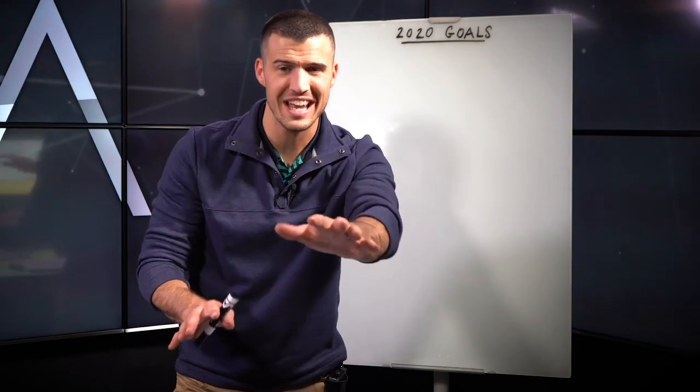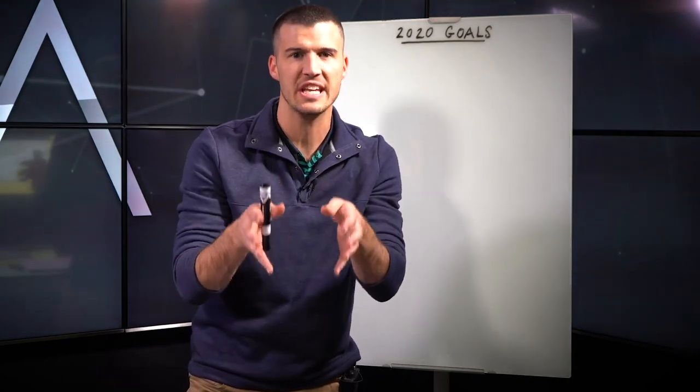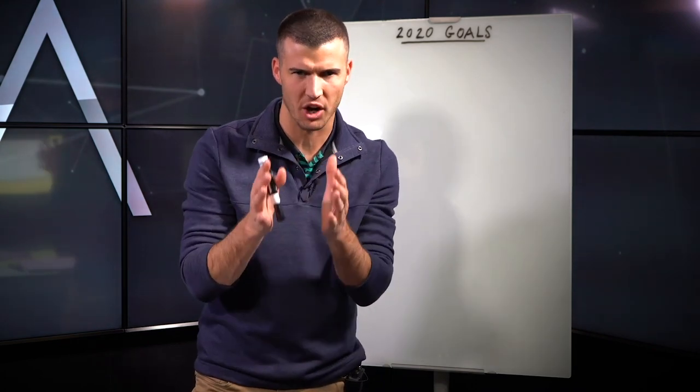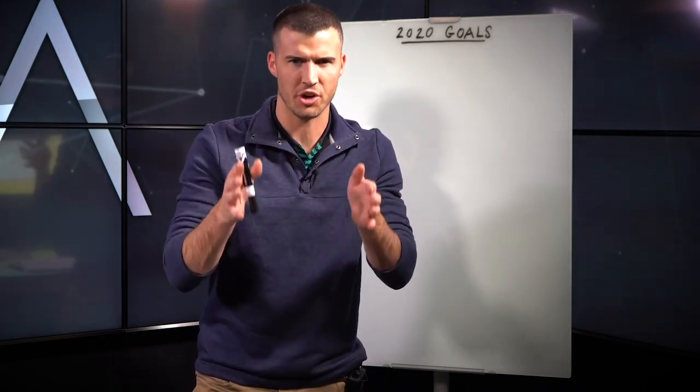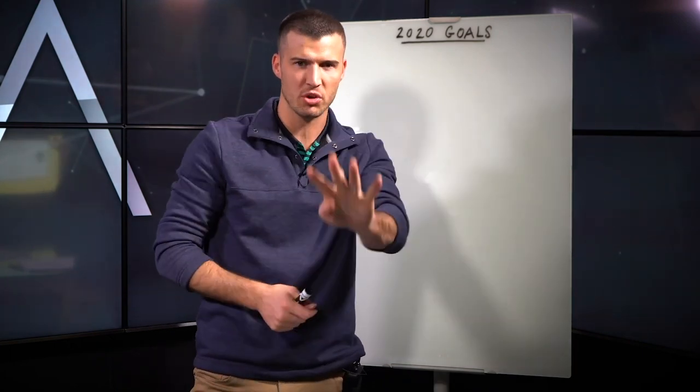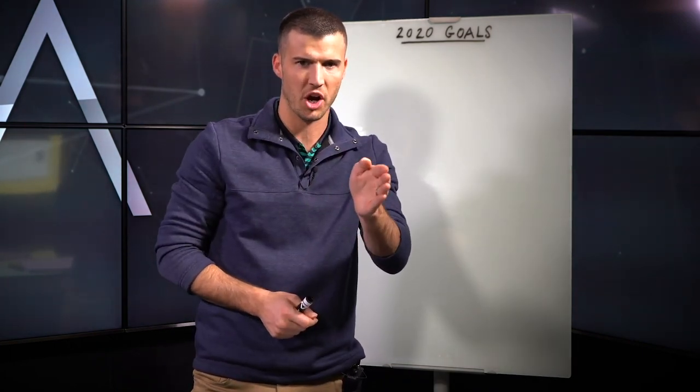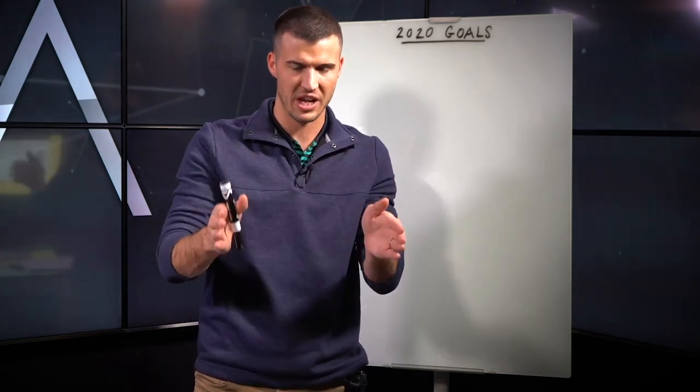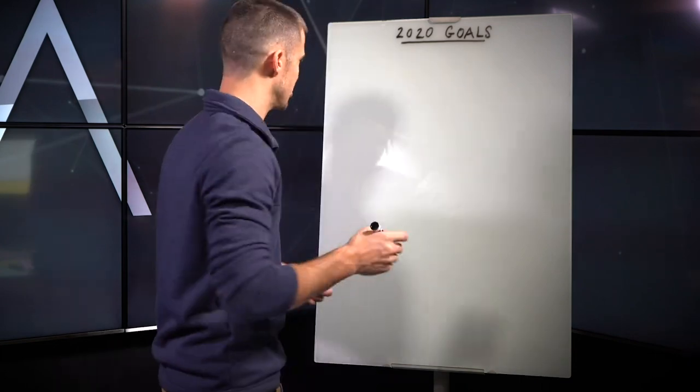Hey, most insurance agents set goals and then very few actually hit them in the next year. I'm Cody Askins. I set a goal back when I was 20 years old to earn 100k my first year because of the steps, the four steps I'm going to share with you. I earned $117,361.13 in my first eight months as an insurance agent.